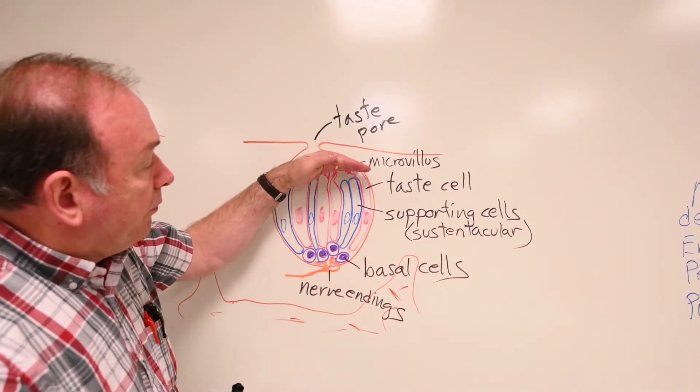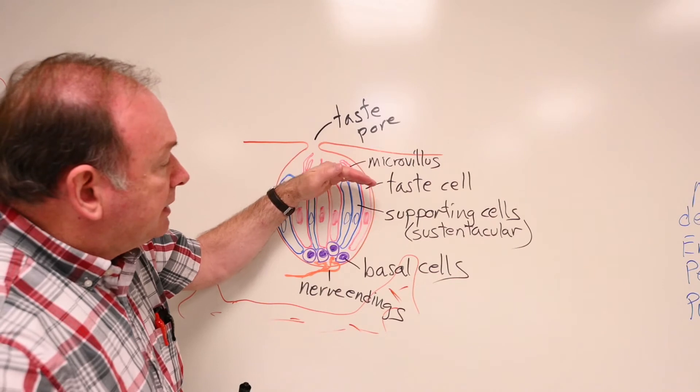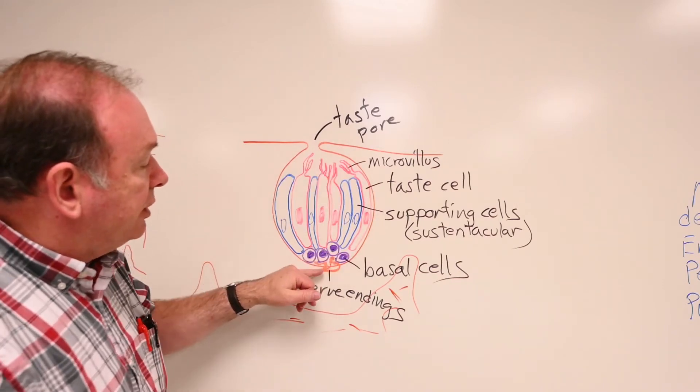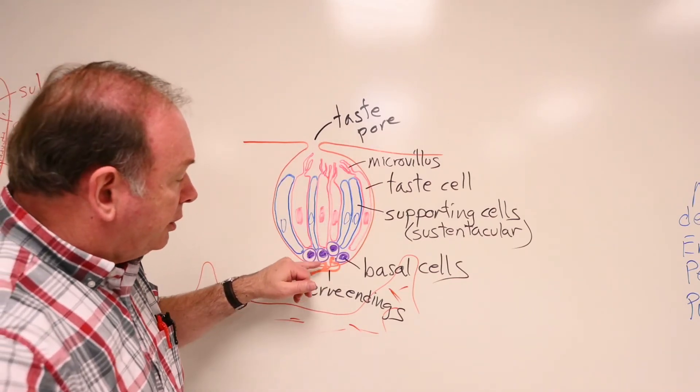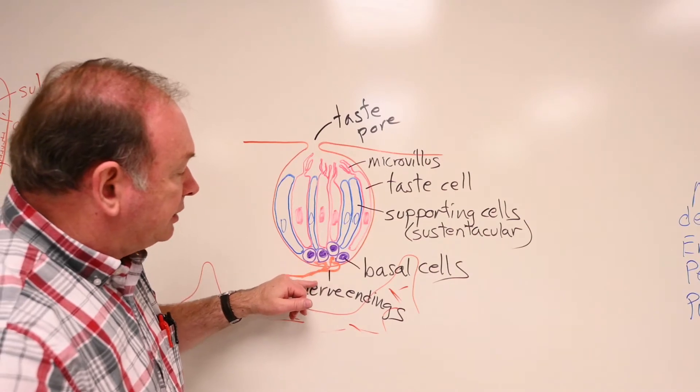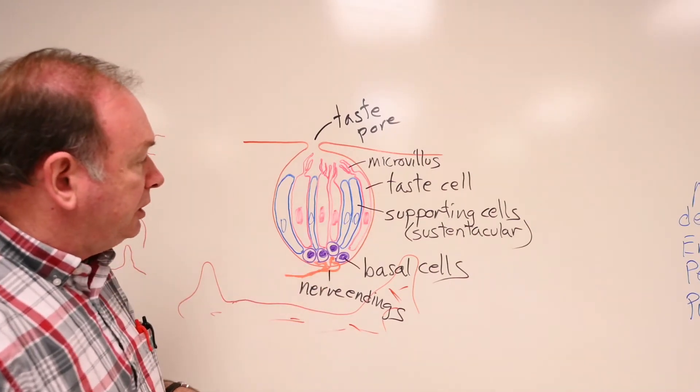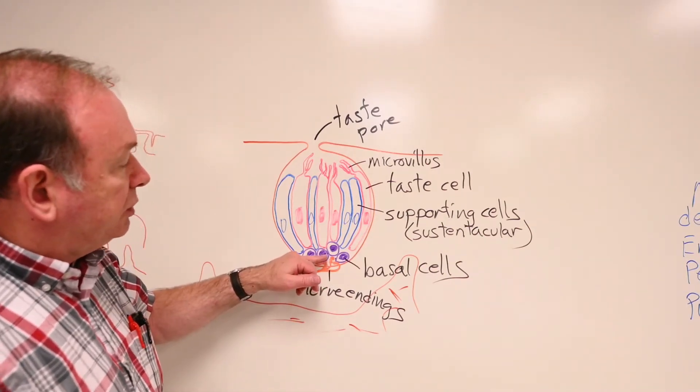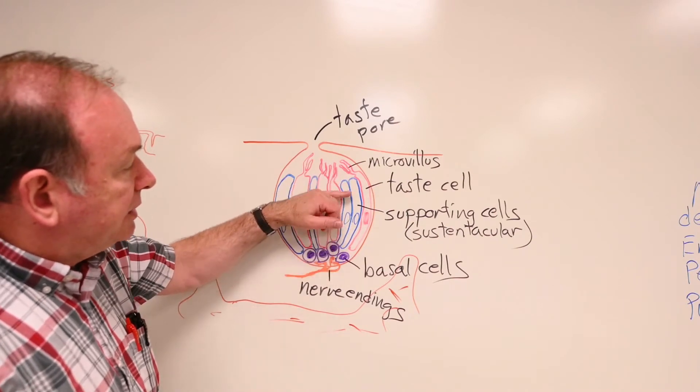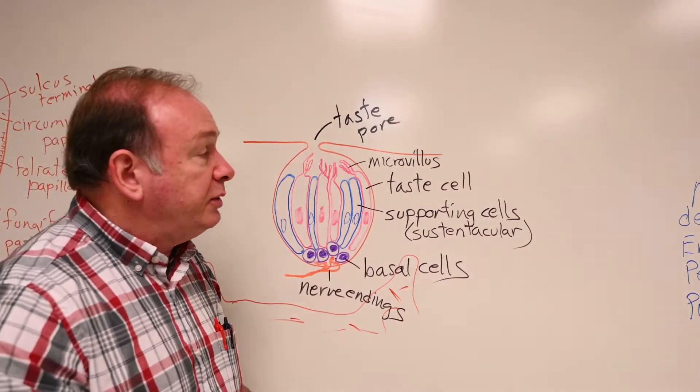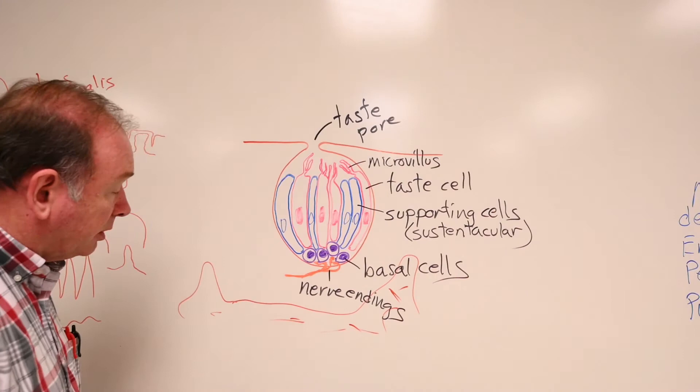So, once they're stimulated, they depolarize and they release neurotransmitter down here. The neurotransmitter stimulates the nerve ending to generate an action potential. So that's where the action potential begins. The depolarization of the cell causes release of neurotransmitter. So, taste buds.